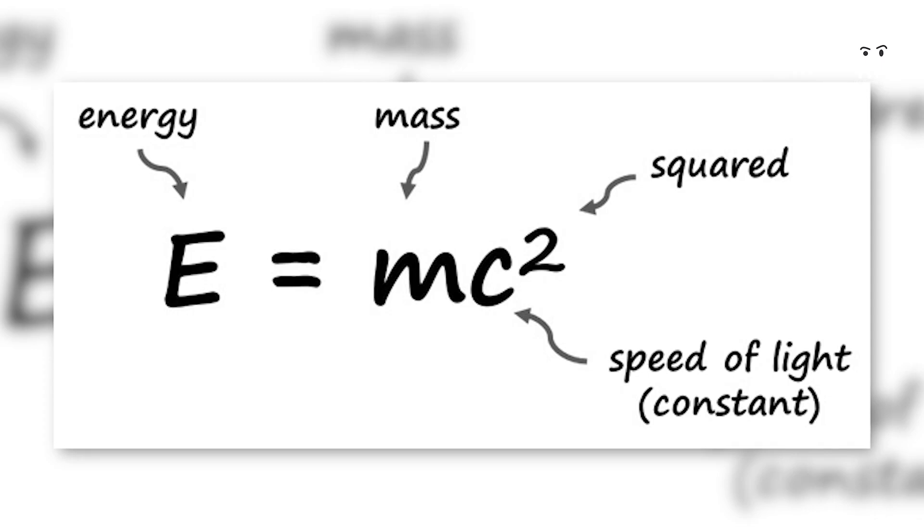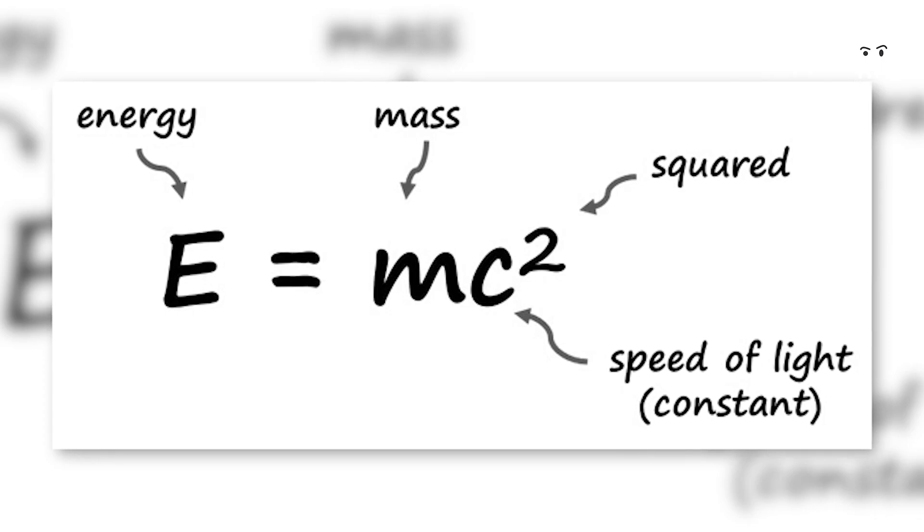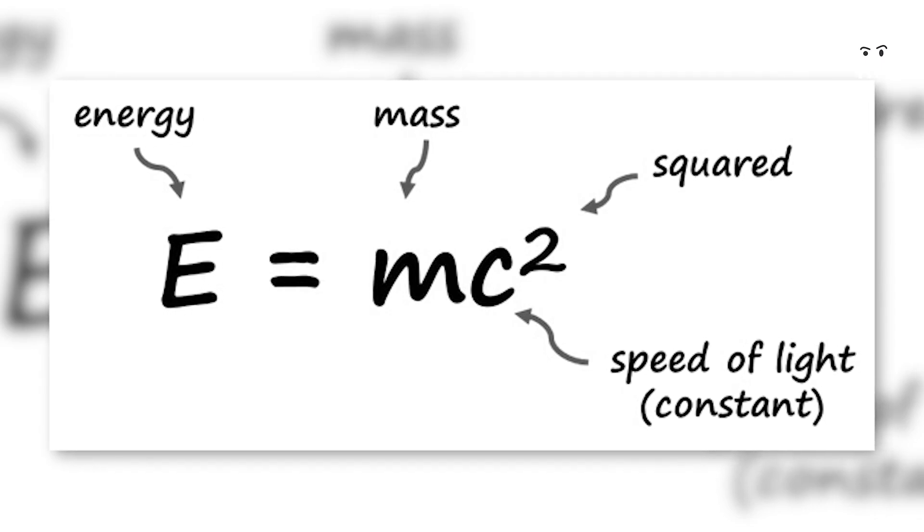Explain E equals MC squared. So E equals MC squared comes from quantum theory. It's one of the most fundamental and clearly the most famous equation in all physics. It says that energy and mass are actually equivalent.